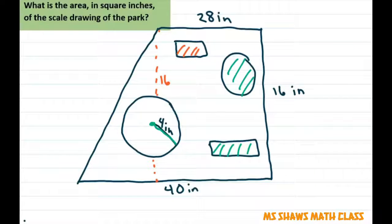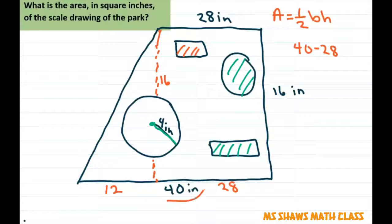So I drew this line down here and I'm going to add the area of the triangle to the area of the rectangle. So the area of the triangle is one half base times height. So the base of this is 40 minus 28, which is 12. So this part would be 12. This part would be 28. And the whole thing equals 40.